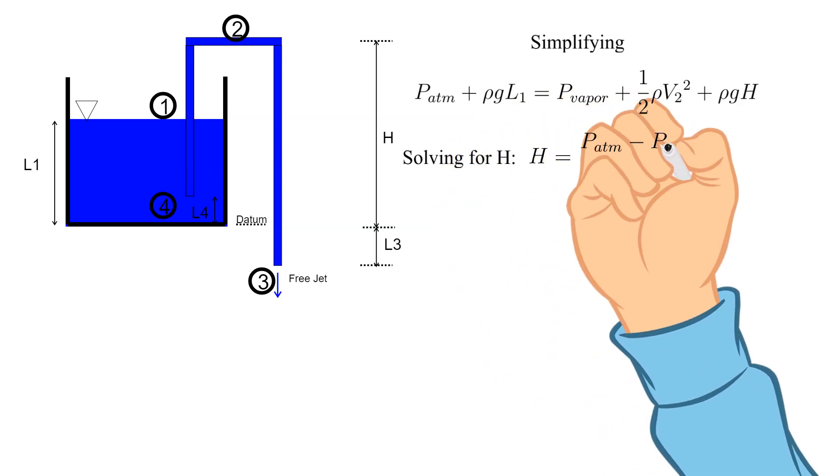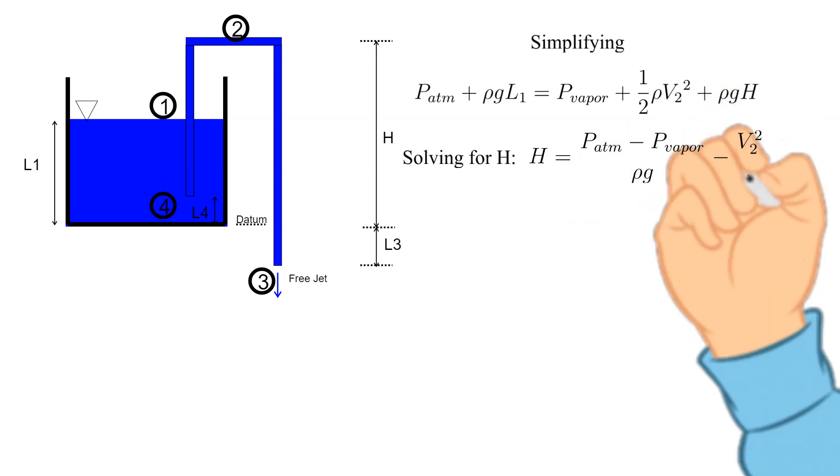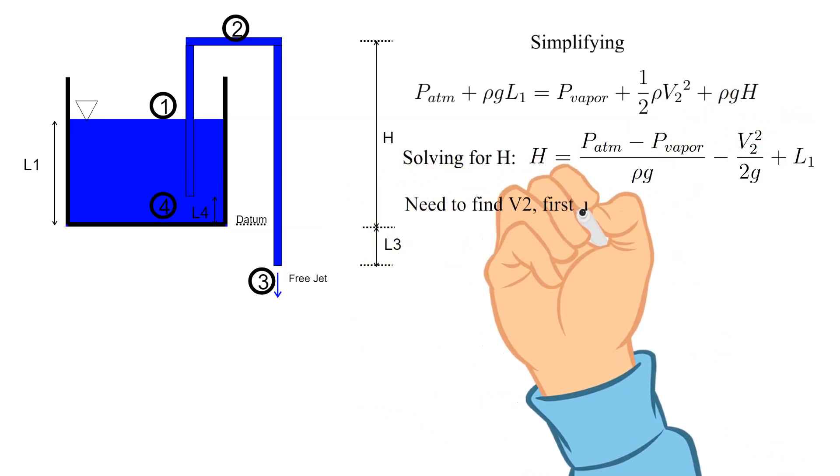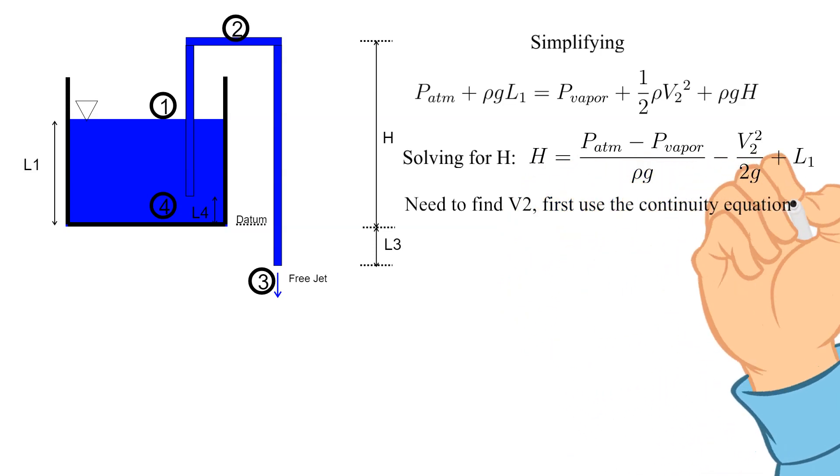Solving for H. H equals the quantity atmospheric pressure minus vapor pressure, divided by rho g, minus v2 squared divided by 2g, plus L1.